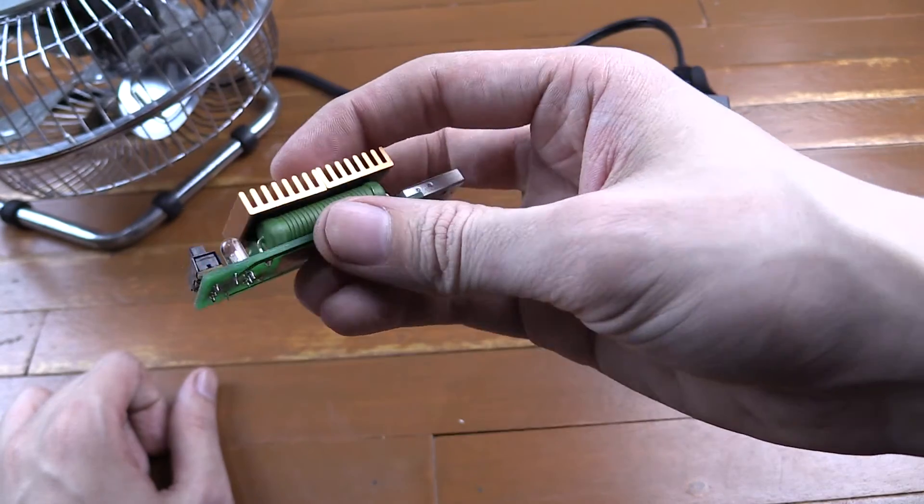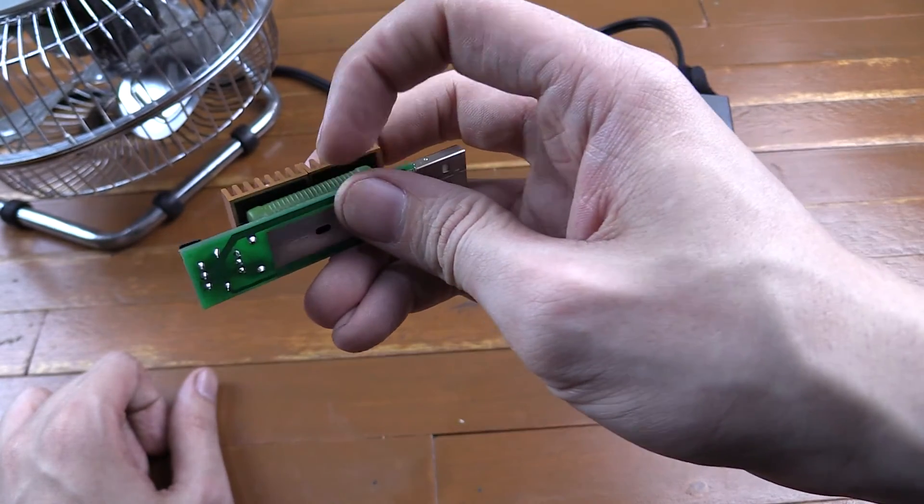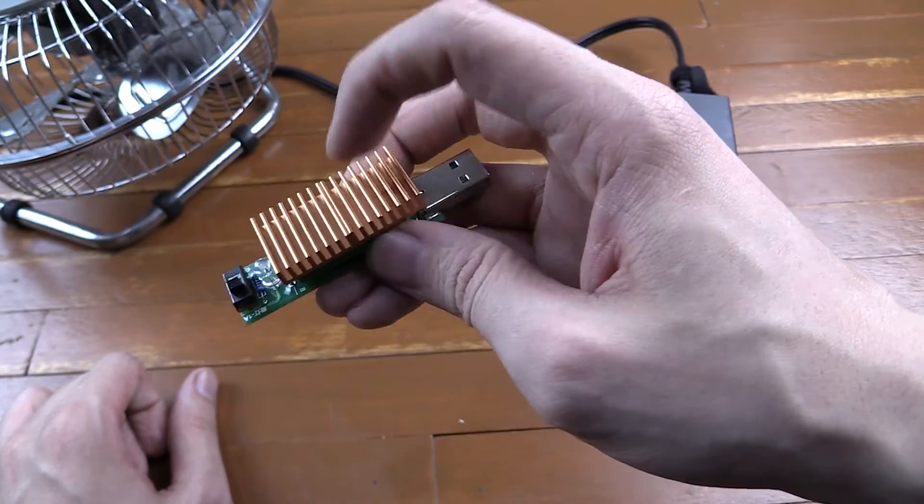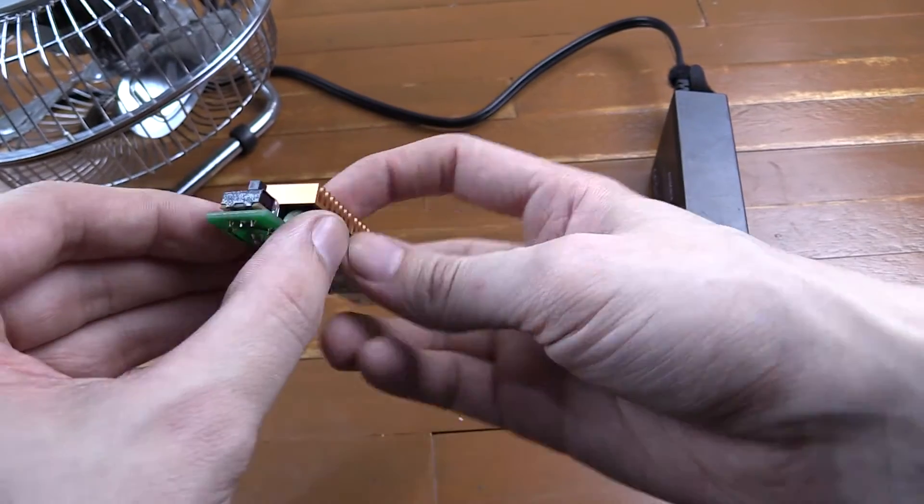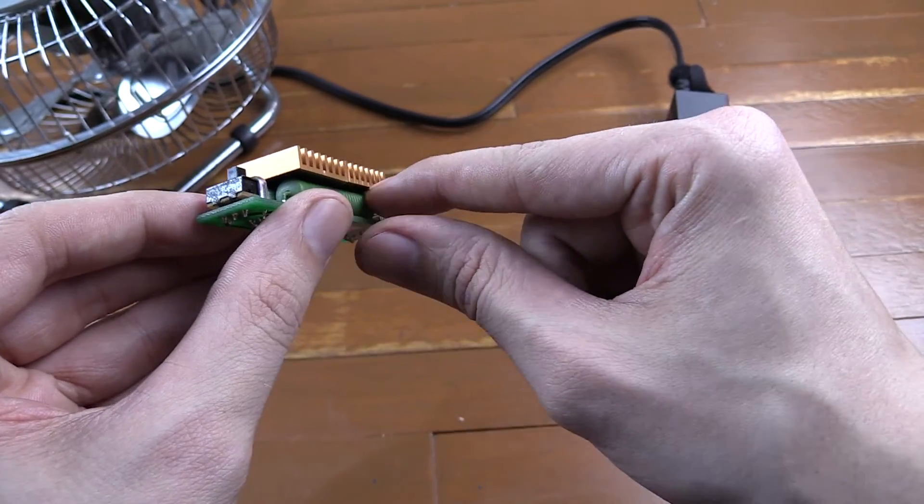I guess one of the problems might be that there's quite a small surface area of the resistor making contact with the heat sink. It's really only the very top of the resistor that touches this.